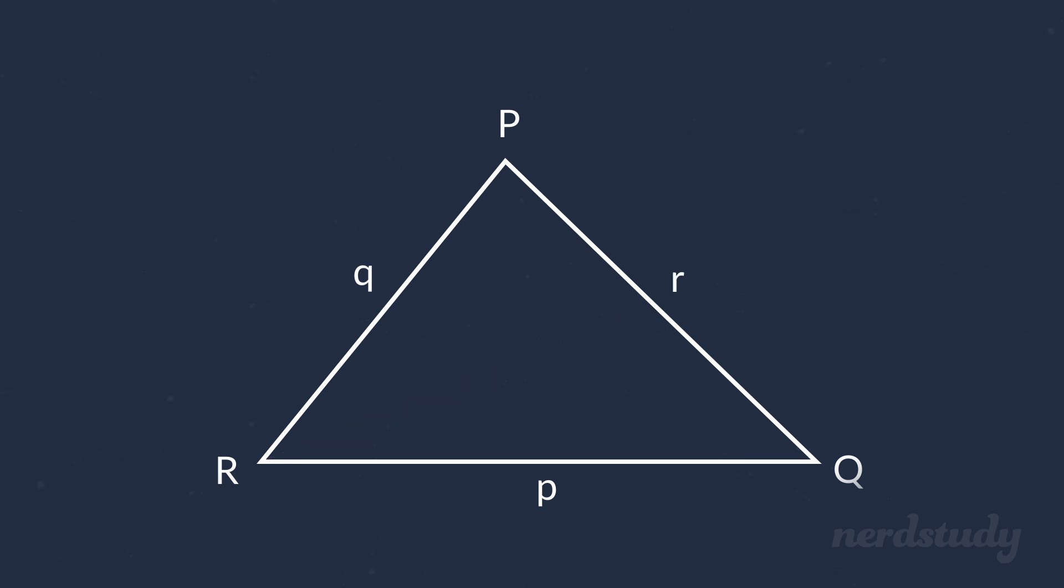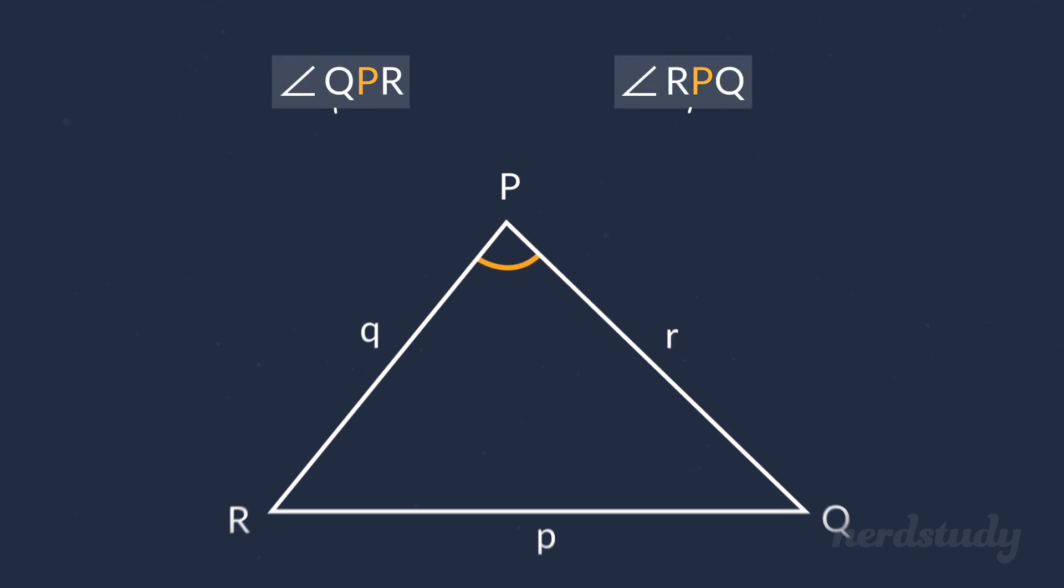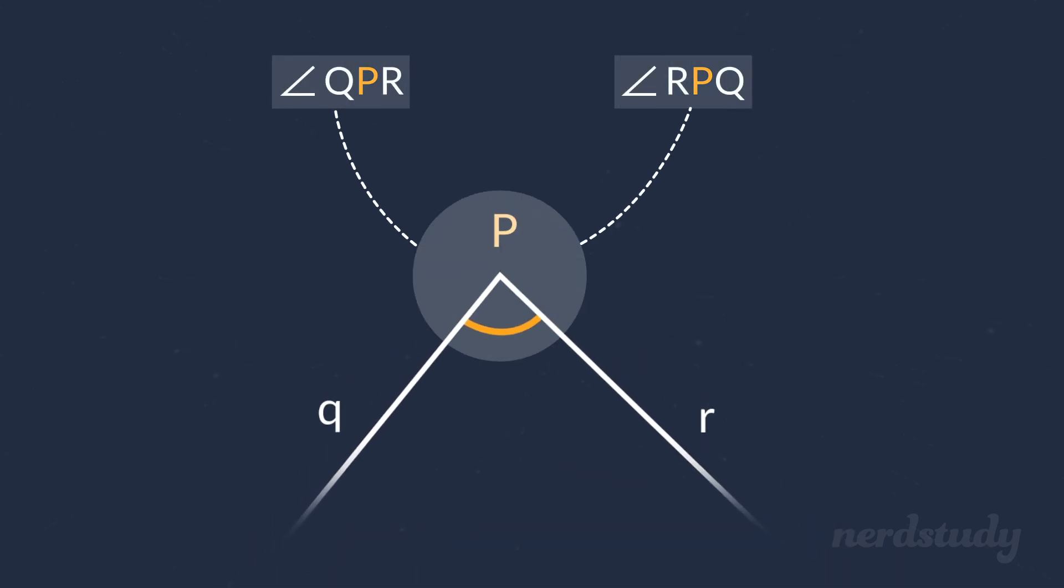Now, if we wanted to refer to this angle, then we can just call it angle QPR, or angle RPQ. Either way, as long as the P is in the middle, we know that it's referring to this angle here, labeled as P.